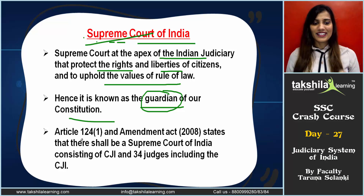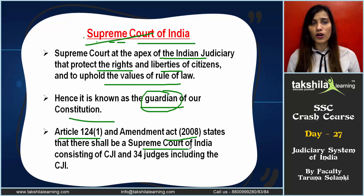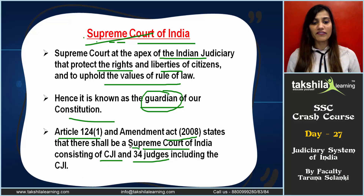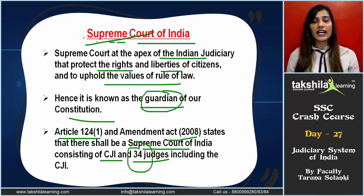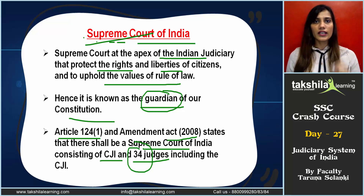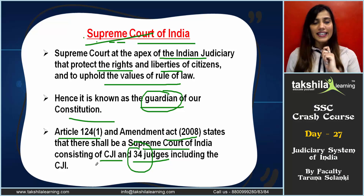Now, Article 124, Part 1, and the amendment act of 2008, states that there shall be a Supreme Court of India consisting of the Chief Justice of India and 34 judges, including the CJI. So the maximum number of judges in the Supreme Court is 34, including the Chief Justice of India. This number is important and is frequently asked in exams — Articles 124 to 147 cover the composition and jurisdiction of the Supreme Court.